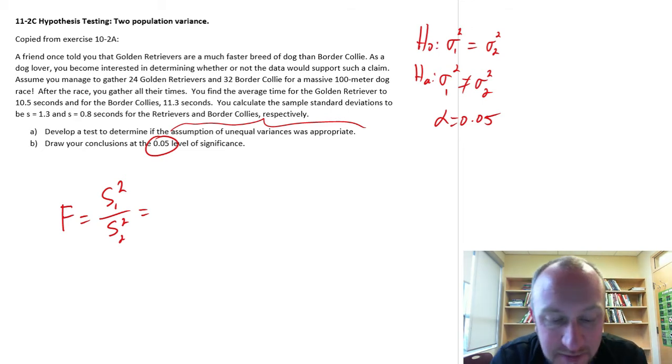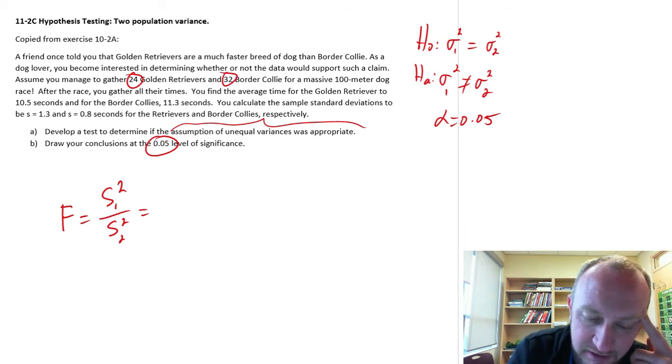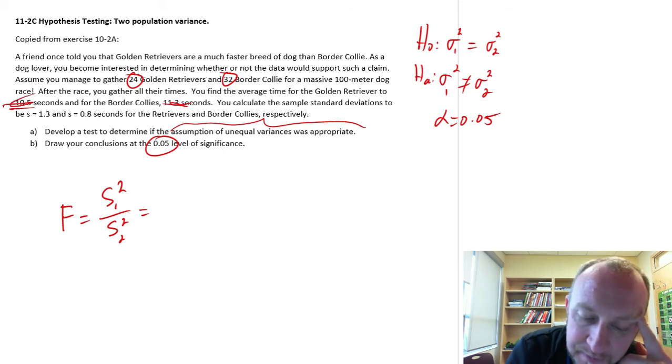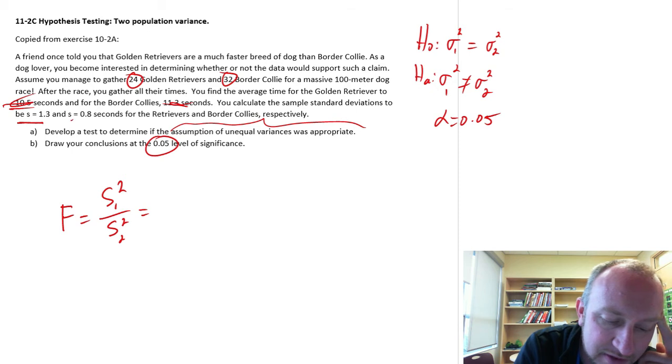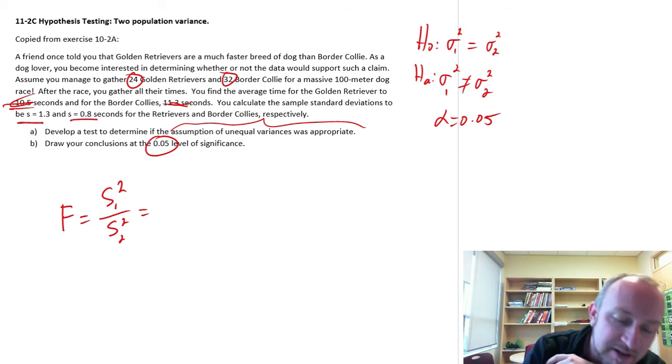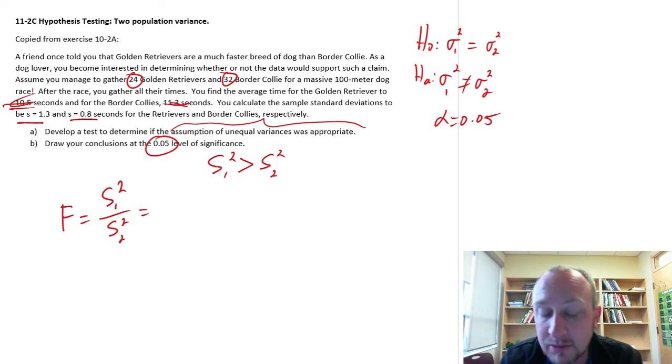As a dog lover, you become interested in determining whether or not the data would support such a claim, that the retrievers are faster. We have 24 Golden Retrievers and 32 Border Collies running a race. We find the averages. We don't actually need the averages for this test. We calculate the sample standard deviations to be 1.3 and 0.8. So there's the values that we need. And remember, we always calculate this test statistic, such that the larger of the two values is the one in the numerator.